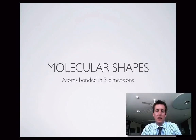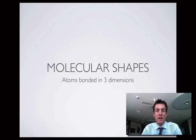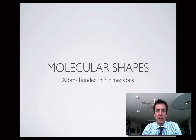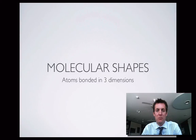This is the second in a series of films about molecular shapes. Hopefully you're coming to it having already watched a film called VSEPR. This film uses VSEPR, or the ideas of it, to explain what different shapes of molecules we'll have depending on the number of electron pairs in a molecule.